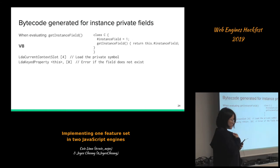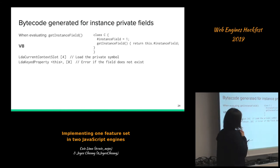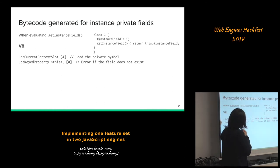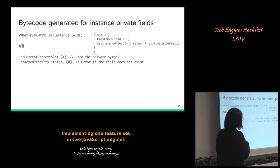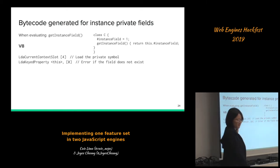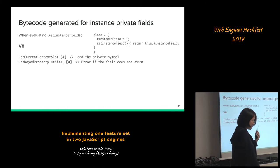When we evaluate access to a private field in V8, we load the private symbol from the context slot as mentioned earlier, then load it using the 'load-keyed-property' instruction, which is also used when you access a property using bracket notation. The inline cache for this instruction is modified so that it errors if the field does not exist — it does not continue looking up in the prototype chain or return undefined if it cannot find it.